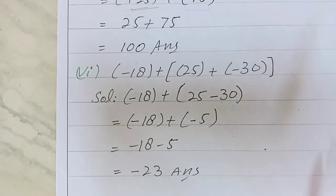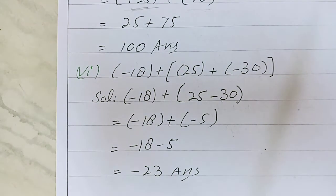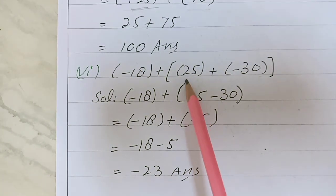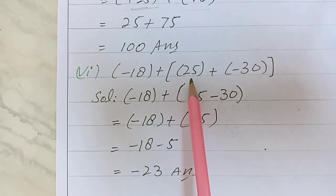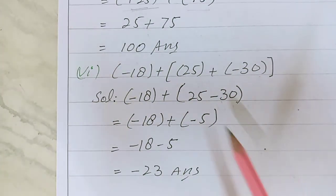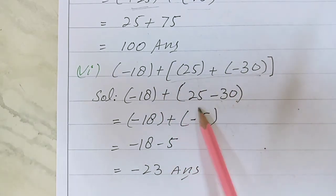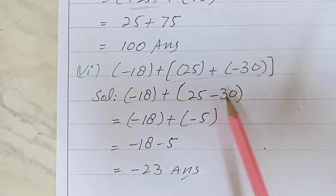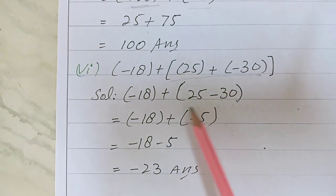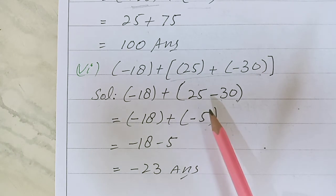Next is part 6: -18 plus, in square brackets we have 25 + (-30). We have to solve these values: 25 plus -30. So 30 minus 25 equals 5, and the sign will be of the greatest value, which is 30, so the sign is minus.